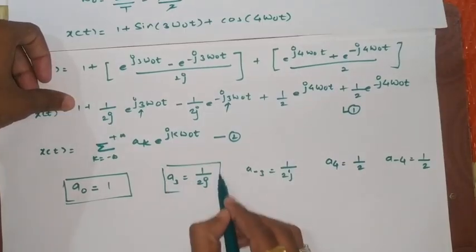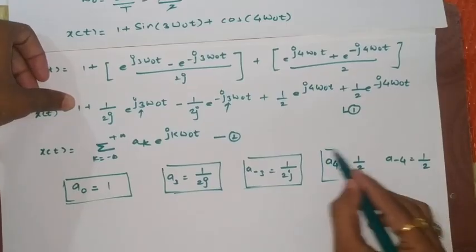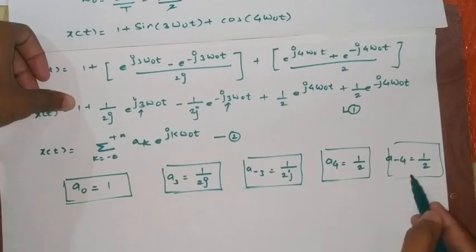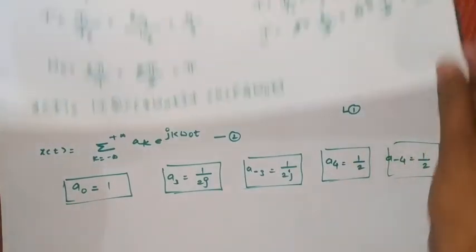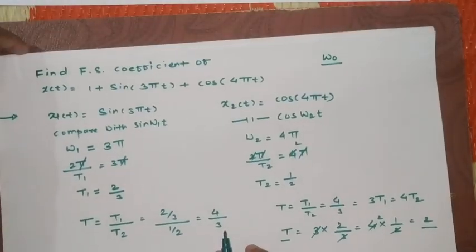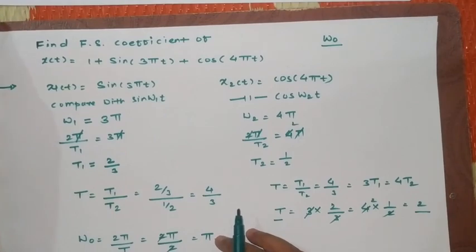So in this way you can find the Fourier series coefficient of any signal which is given in a form like this one. I hope you understood this concept. Now if it is asked to find Fourier series coefficient of any signal you should be able to find it in a proper way. Thank you.